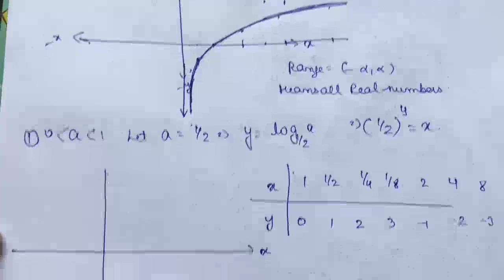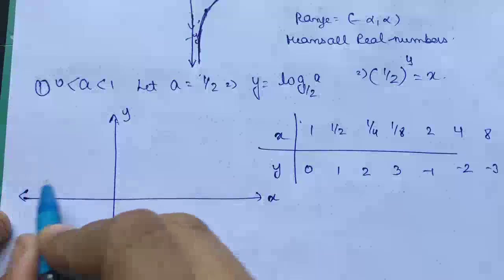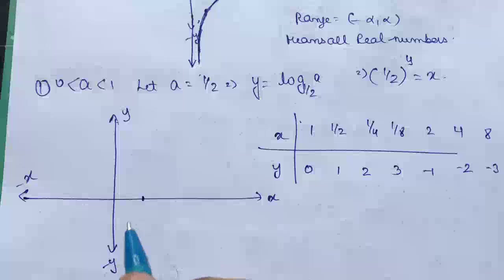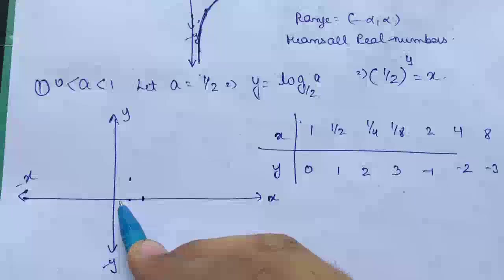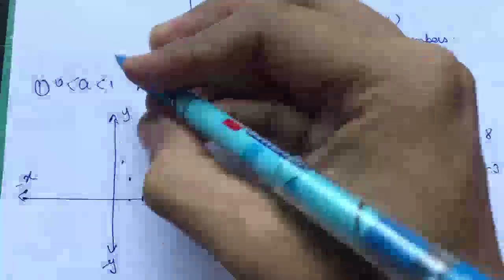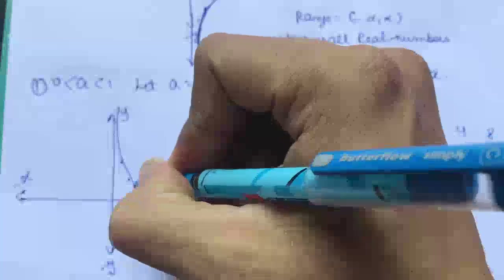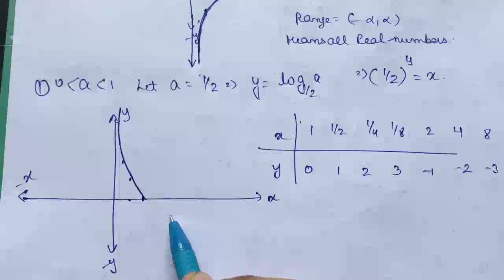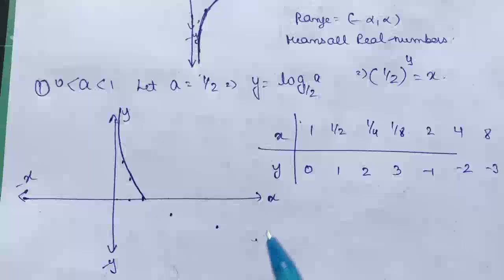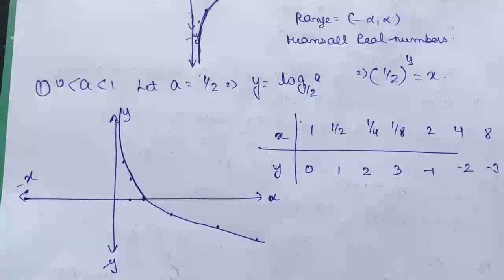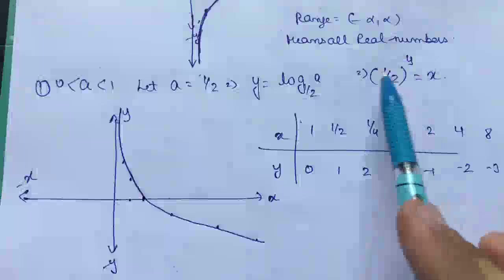Similarly we make an x and y plot. For y = 0, x = 1. For y = 1, x = 1/2. For y = 2, x = 1/4. For y = 3, x = 1/8. For y = −1, x = 2. For y = −2, x = 4. For y = −3, x = 8.